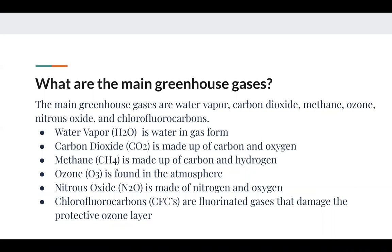When we chop down a tree, that tree used photosynthesis, which requires CO2 to carry out. When you chop down the tree, the CO2 that it absorbed for photosynthesis gets emitted back into the atmosphere, contributing to the amount of CO2 in the atmosphere. Also, fossil fuels — when you're driving your car, the car uses gas and emits CO2 back into the atmosphere.